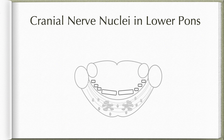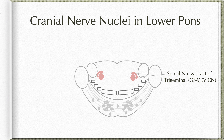Considering the gray matter of the lower pons, we have the middle four cranial nerve nuclei located here. For the fifth nerve, we have the spinal nucleus and the tract of trigeminal, which belongs to the general somatic afferent column receiving pain and temperature sensation from the head region. For the sixth nerve, we have the abducens nucleus, located close to the posterior surface on either side of the midline. This belongs to the somatic efferent column and supplies the lateral rectus muscle.